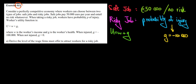Let's have a look at question one in this video. So we have a perfectly competitive economy where workers can choose between two types of jobs, safe and risky jobs.